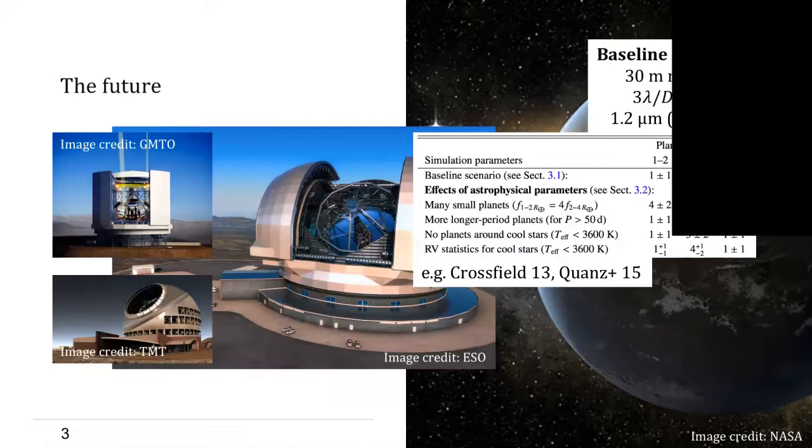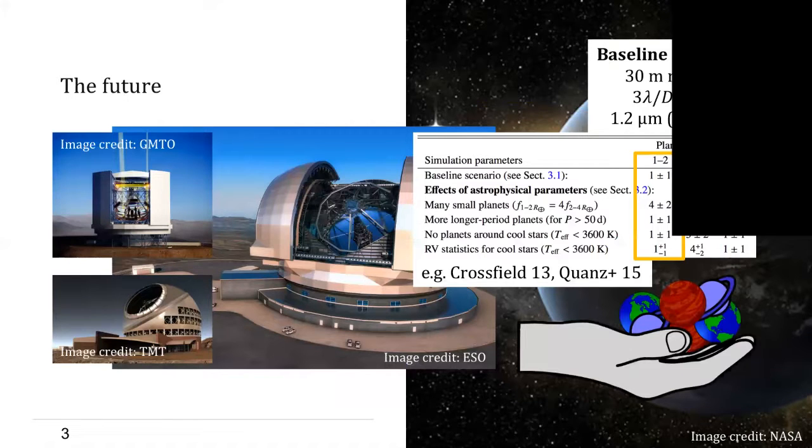From the ground, the only instruments being capable of directly imaging small-sized exoplanets will be the ELTs. However, as has been shown by Ian Crossfield, for example, they will only be powerful enough to detect maybe a handful of super Earths with uncertainties of the same order of magnitude.